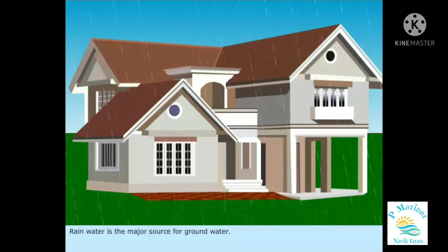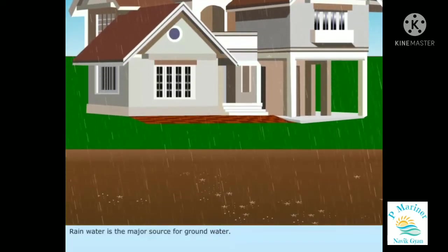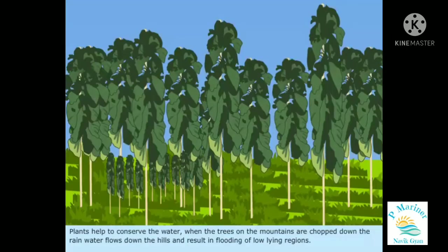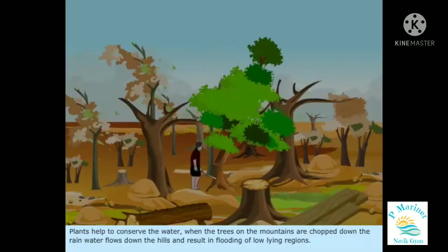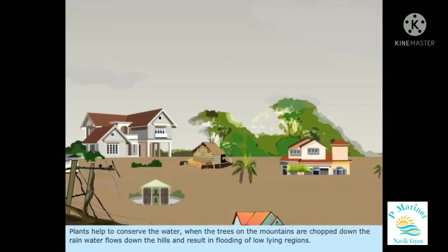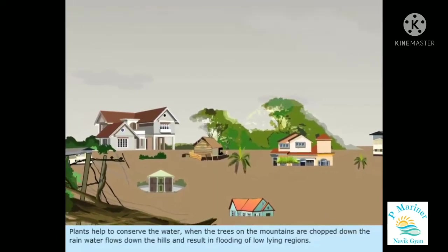Rainwater is the major source for groundwater. Plants help to conserve water. When the trees on the mountains are chopped down, the rainwater flows down the hills and results in flooding of low-lying regions.